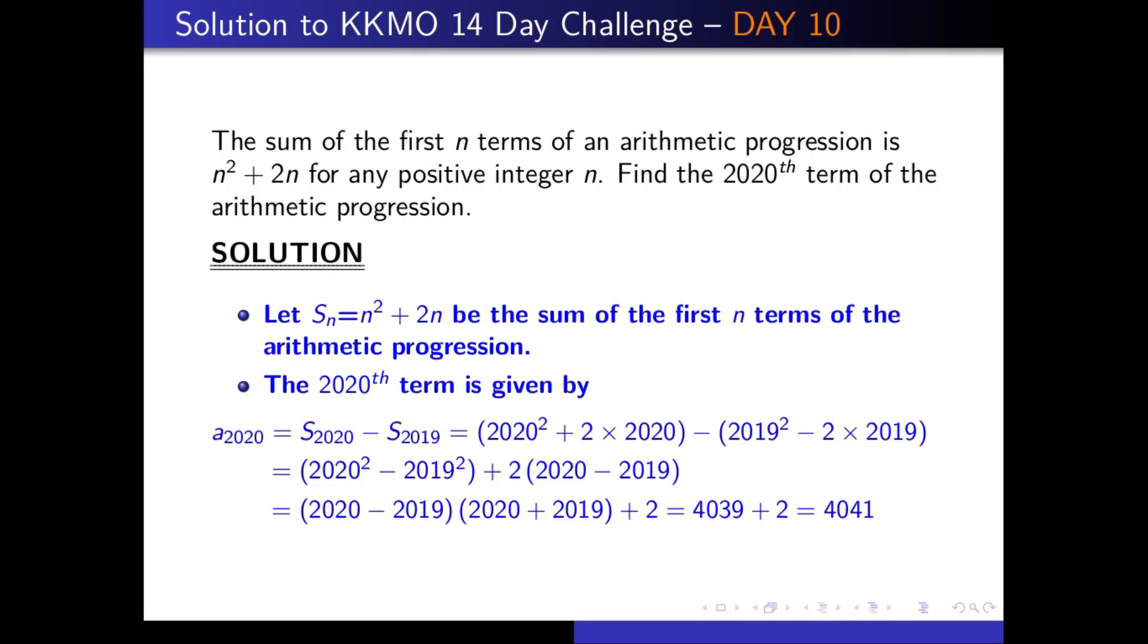This simplifies to (2020 - 2019)(2020 + 2019) + 2, which equals 4039 + 2. The total is 4041. So the 2020th term of the arithmetic progression is 4041.